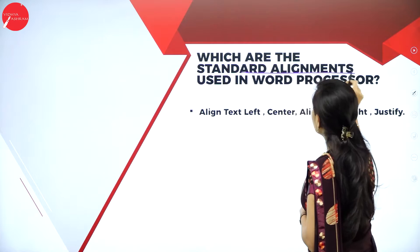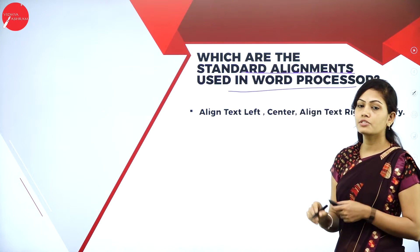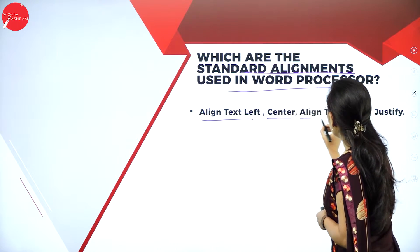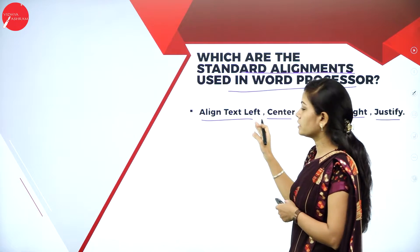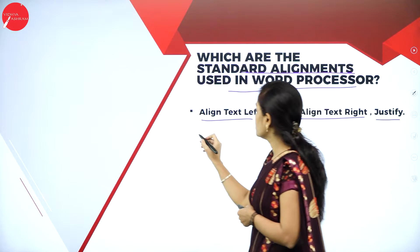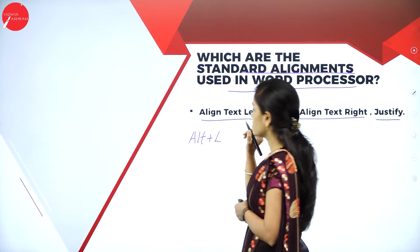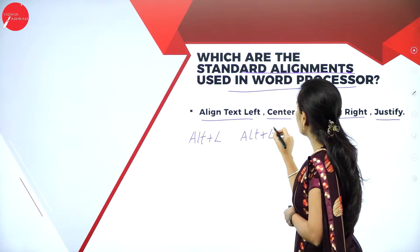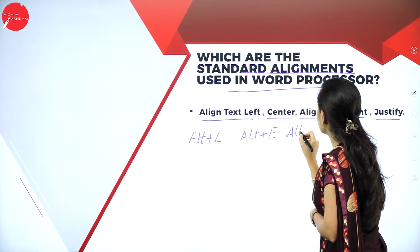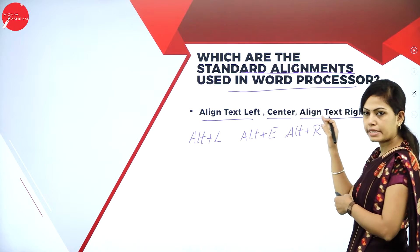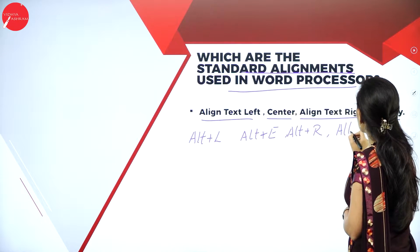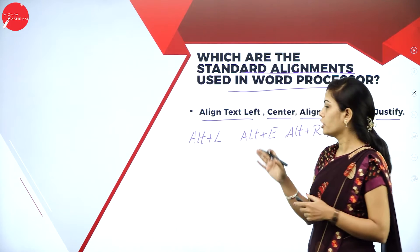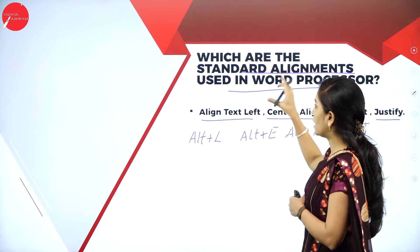Which are the standard alignments used in a word processor? Already I have explained about alignments. We have align text left, center, align text right, and justify. The keyboard shortcut methods are: Alt+L for align text left, Alt+E for center, Alt+R for align text right, and Alt+J for justify. Keep in mind, if you don't have a mouse, you can use these keyboard shortcut methods for alignment of text.